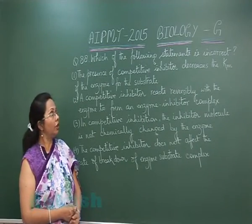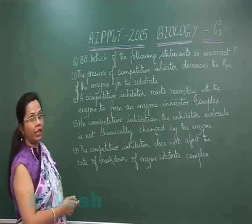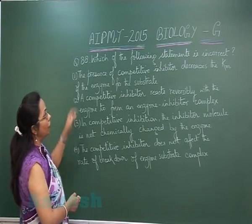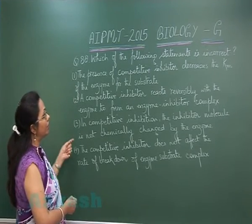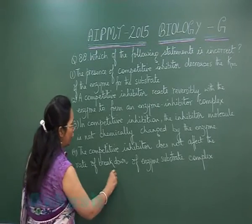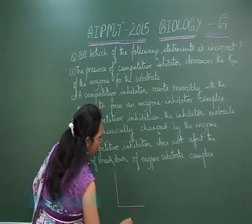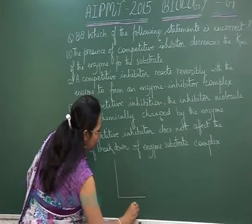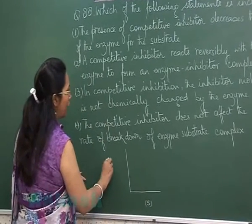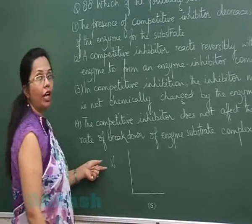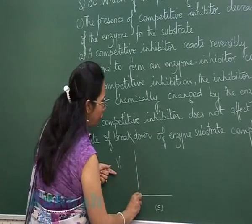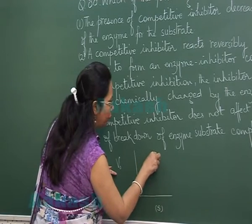Question 88: Which of the following statements is incorrect? The presence of a competitive inhibitor decreases the Km of the enzyme for the substrate. Let us see — if we plot a graph where we take substrate concentration on the x-axis and reaction velocity on the y-axis, we get a rectangular hyperbola.